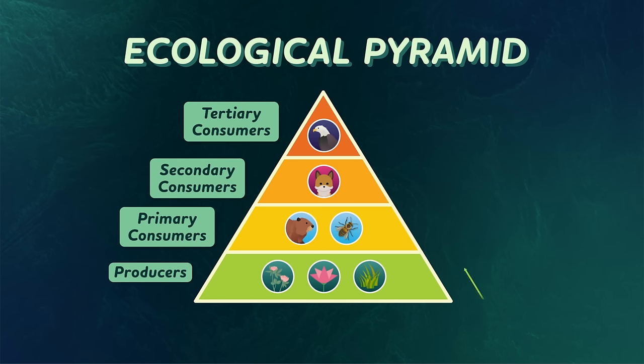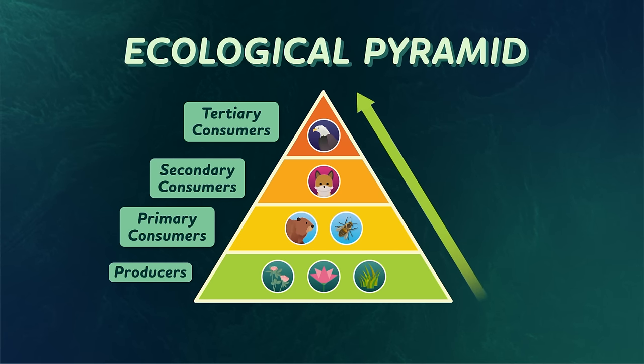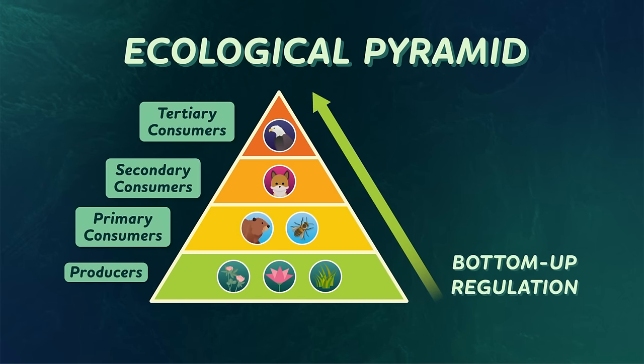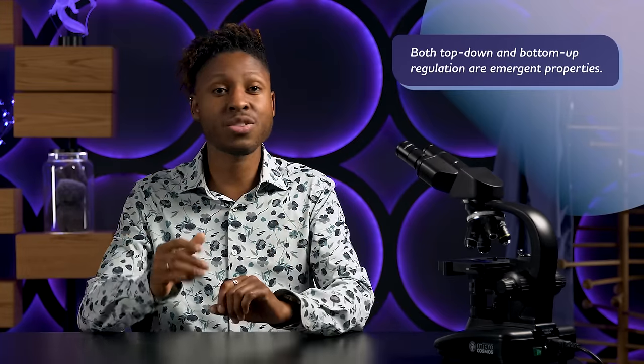Regulation can also start from the bottom, since the energy available from primary producers limits the number of predators at the top of the food chain. This type of control is called bottom-up regulation. This type of ecological regulation isn't an intentional thing—a wolf doesn't wake up one day and decide that there should be more plants in their community and then gorge itself on a buffet of local deer. That's because top-down regulation is an emergent property, meaning it arises organically and collectively from organisms all surviving in their own unique ways. And through that, whole complicated systems of relationship and energy transfer emerge.